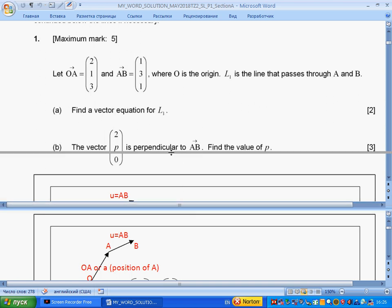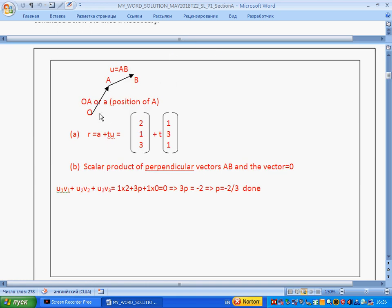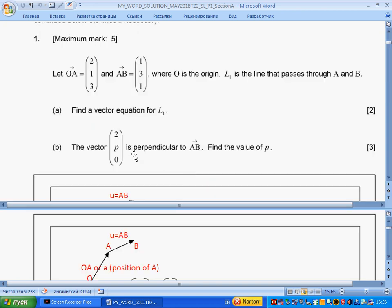So in the solution, I have drawn vector OA and AB. OA is the position of A and vector AB will take you from A to B. The equation of the line will be parametric, so parameter is T. We have coordinates of A plus T multiplied by vector along this line, which we take as vector AB.